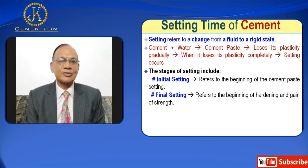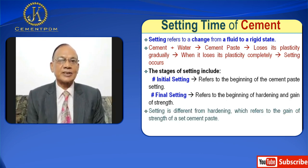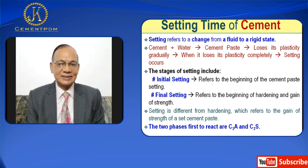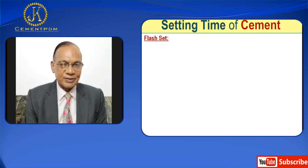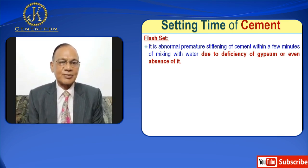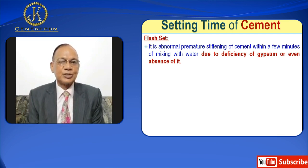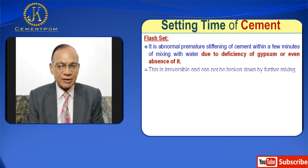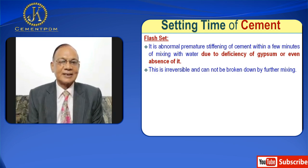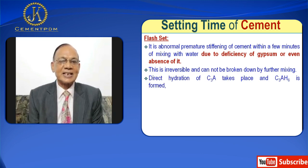Setting is different from hardening, which many people confuse. Hardening refers to the gain of strength of a set cement paste. The two phases first to react are C3A and C3S. Now I will talk about flash set and false set. Flash set is abnormal premature stiffening of cement within a few minutes of mixing with water due to deficiency of gypsum or even absence of it. This is irreversible and cannot be broken down by further mixing. Direct hydration of C3A takes place and C3AH6 is formed.